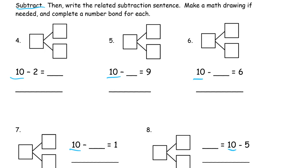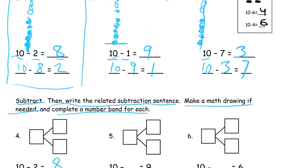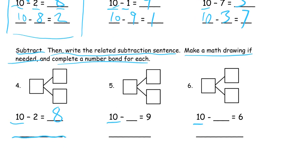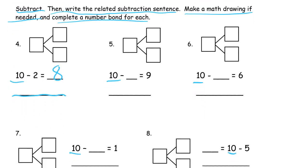Subtract. Then write the related subtraction sentence. Make a math drawing if needed. Complete the number bond for each. So if you know your parts of 10, you see the 2, you know there has to be an 8. And the related subtraction sentence I'm going to write on this line right here. So that would be, and if you remember from before, right, they gave us the spots for like where to write each number and they wrote the symbols for us. But now it's a little bit harder. We have to write the whole thing all by ourselves.